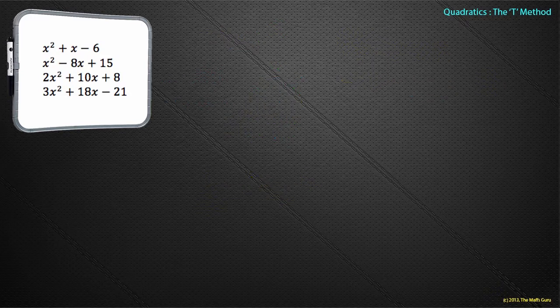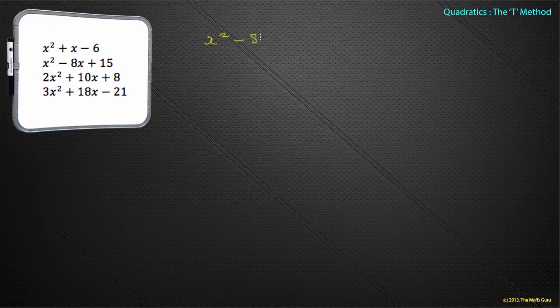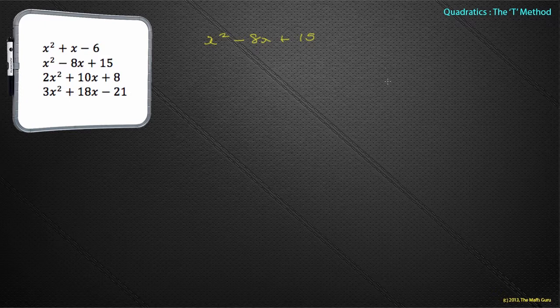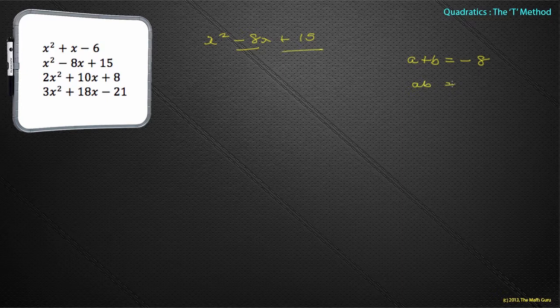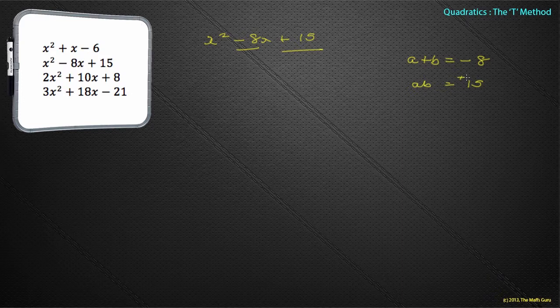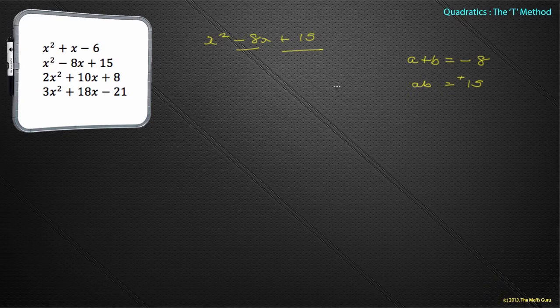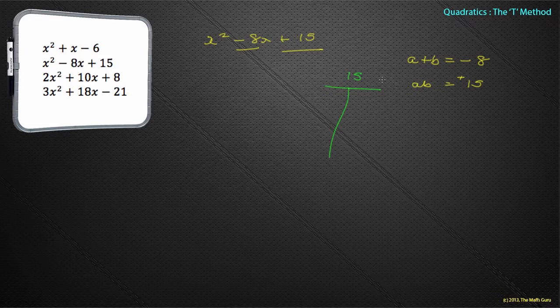One more example? I think so. Let's do the next one on the list: x² - 8x + 15. Well, I'm not going to write all the theory out. We're just going to remember this time that a + b is equal to this middle number here, which is -8. And we know that a × b is equal to this number here, which is 15. And I'm going to make sure I put this little plus here, because that's actually incredibly important to me. What do we do now? We're going to draw our T.